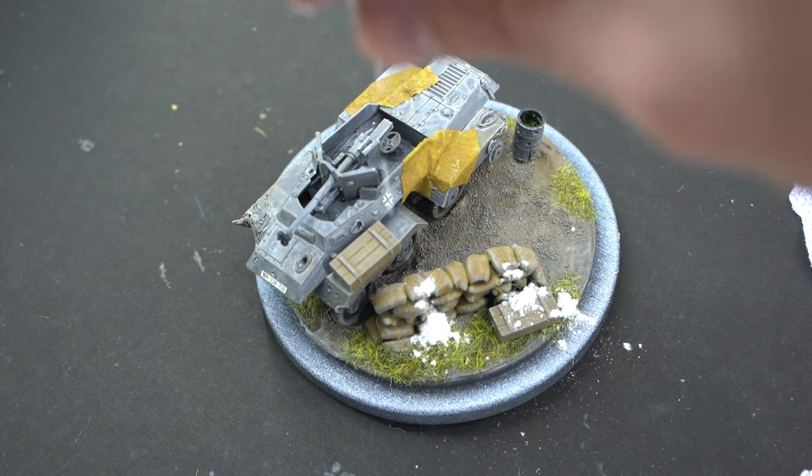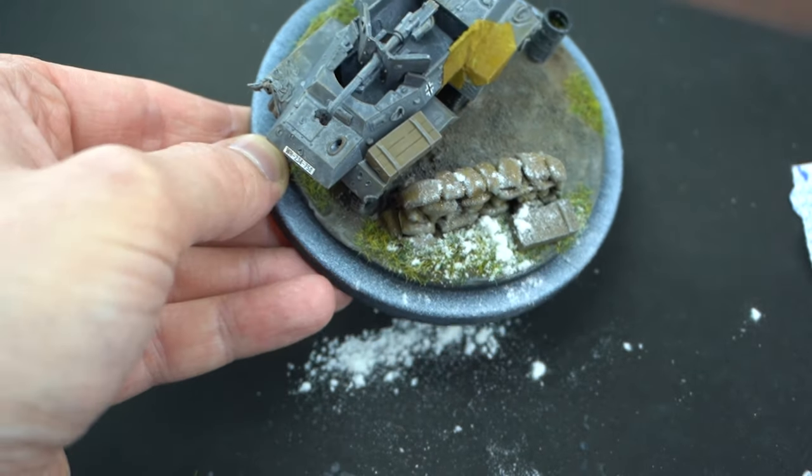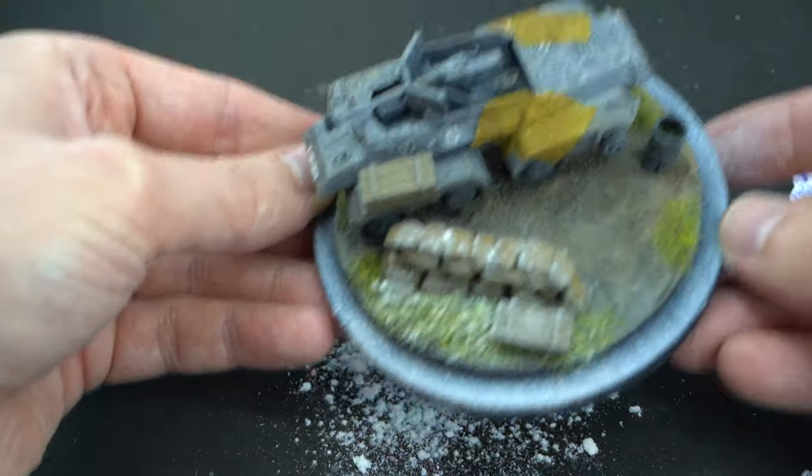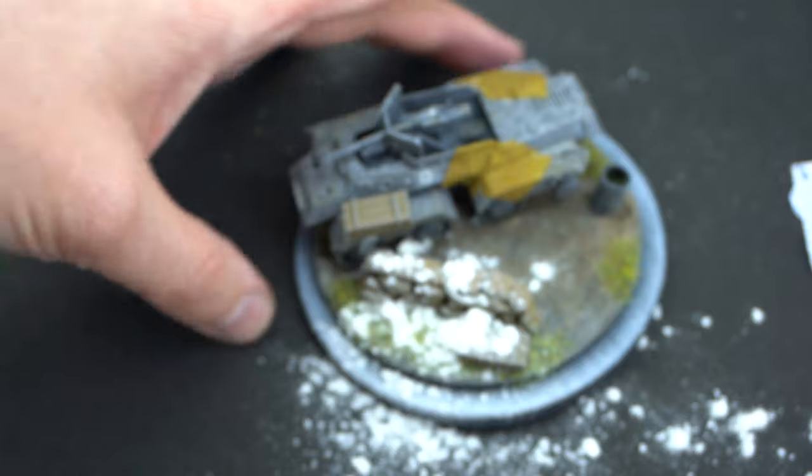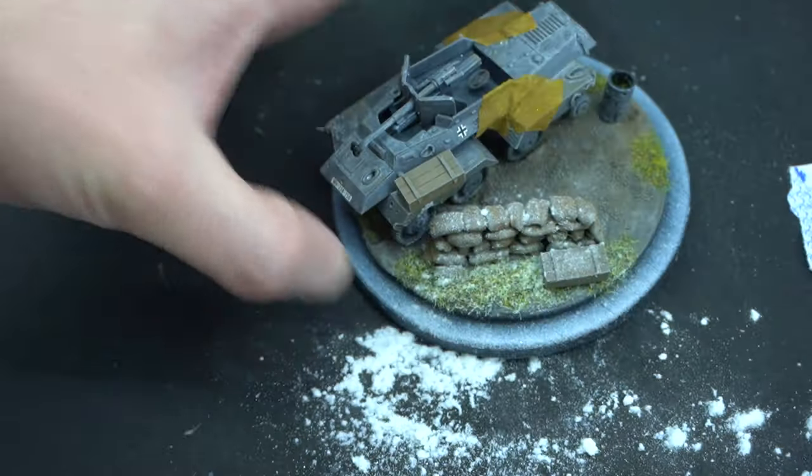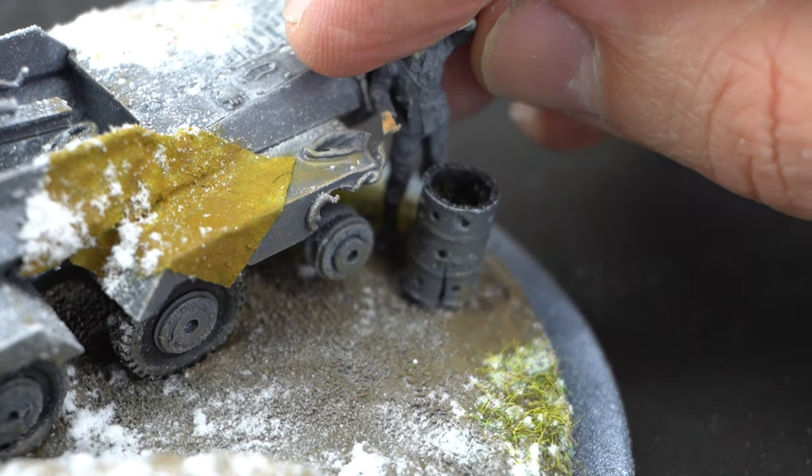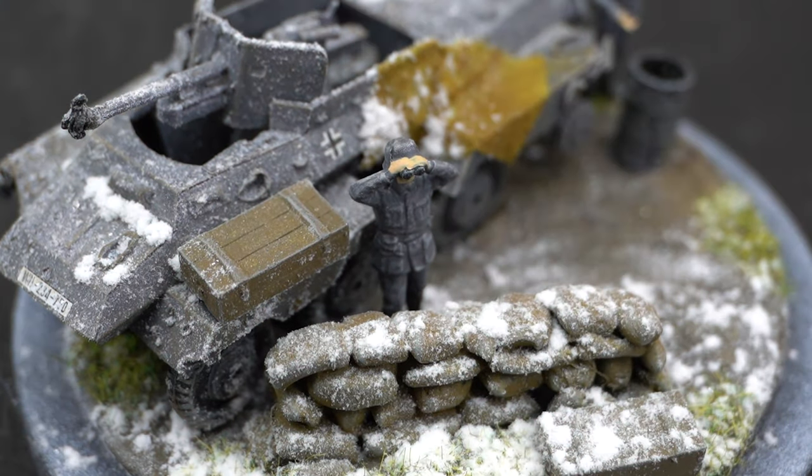So for the snow, I've got this Noch powdery snow product, and I have used this before, but it was very many years ago. To apply this, I simply sprinkled it over the diorama base. I didn't want to go too heavy in certain areas, so it took a little bit of time and manipulation to get it quite right. But I was going for a light dusting, as if the little outpost the soldiers have created has been caught off guard by the first snow of the year.